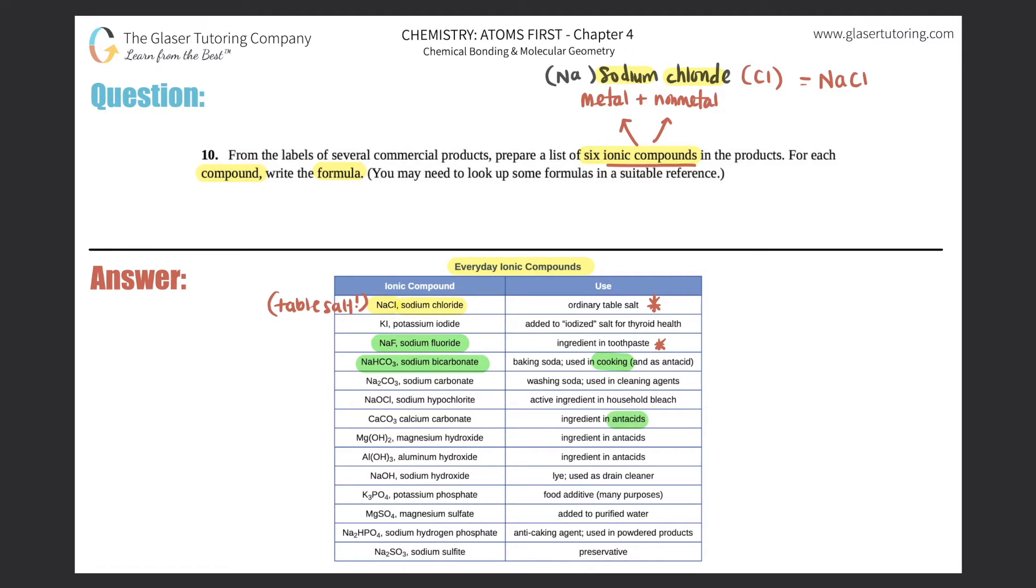Antacids—those are like Pepto-Bismol, Maalox, Tums. Ingredients used in antacids are calcium carbonate, which is CaCO3, magnesium hydroxide, Mg(OH)2, and aluminum hydroxide, which is Al(OH)3. Those three are used in antacids to make your tummy feel a little better if it's too acidic.